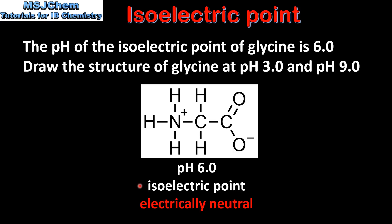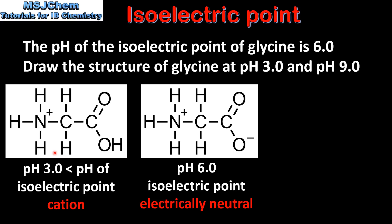At its isoelectric point an amino acid is electrically neutral — it has both a positive and a negative charge. Here we have the structure of glycine at pH 3.0. At pH 3.0, which is less than the pH of the isoelectric point, glycine has a positive charge — it's a cation.